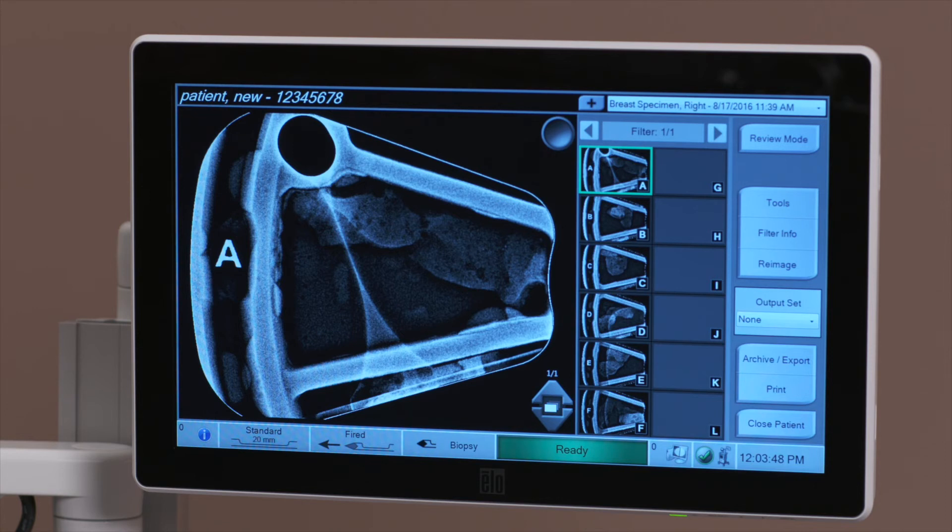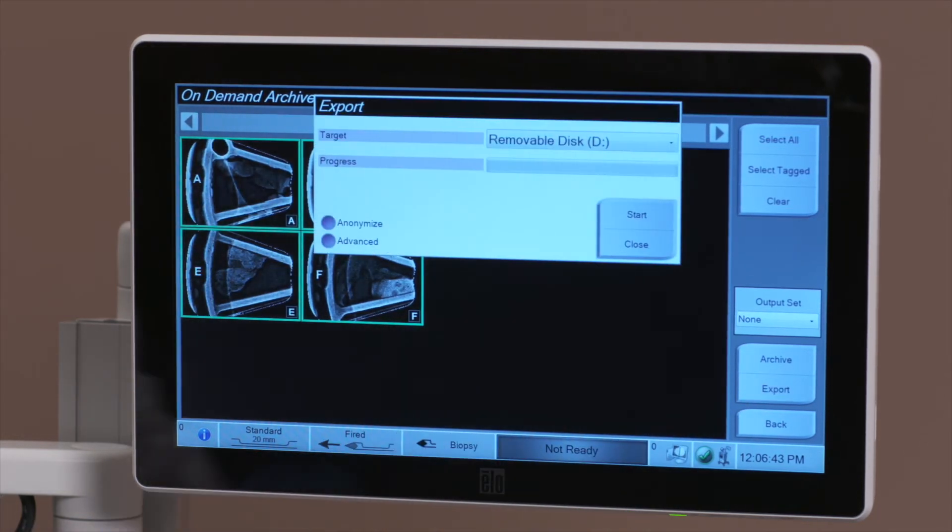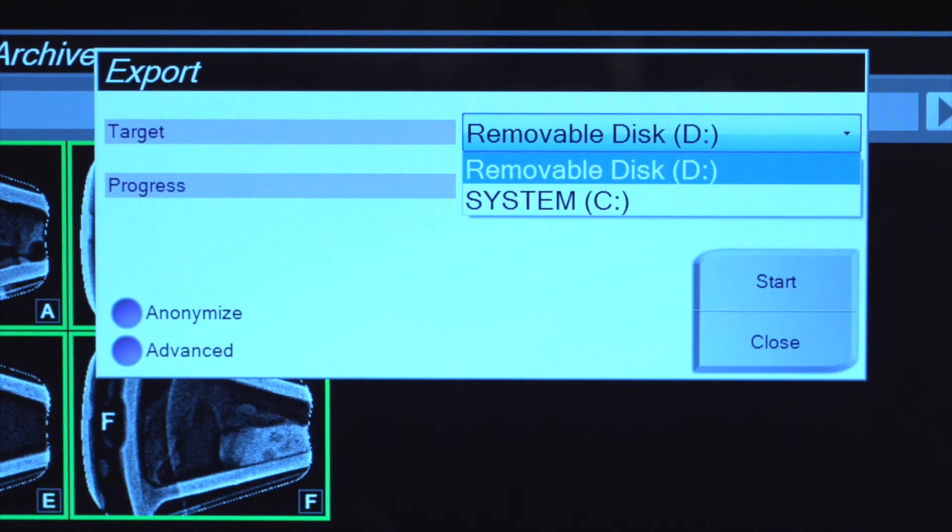Selecting the archive button will send data to a PACS device. Selecting the export button will send data to a mapped drive such as a local hard drive, a USB device connected to the console, or a network drive.